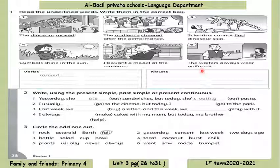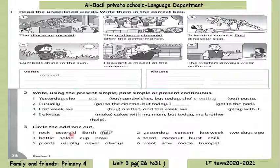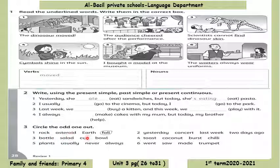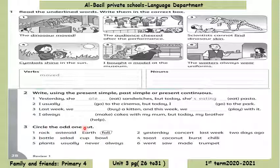Number three: circle the odd one out. For example, number one: rock, asteroid, earth, fall. Rock — صخرة. Asteroid — نجمة or كبيرة. Earth — أرض. Fall — يسقط. The odd one is 'fall'. Why? Because it is a verb and all the other words are nouns. That's all for today — see you next time!